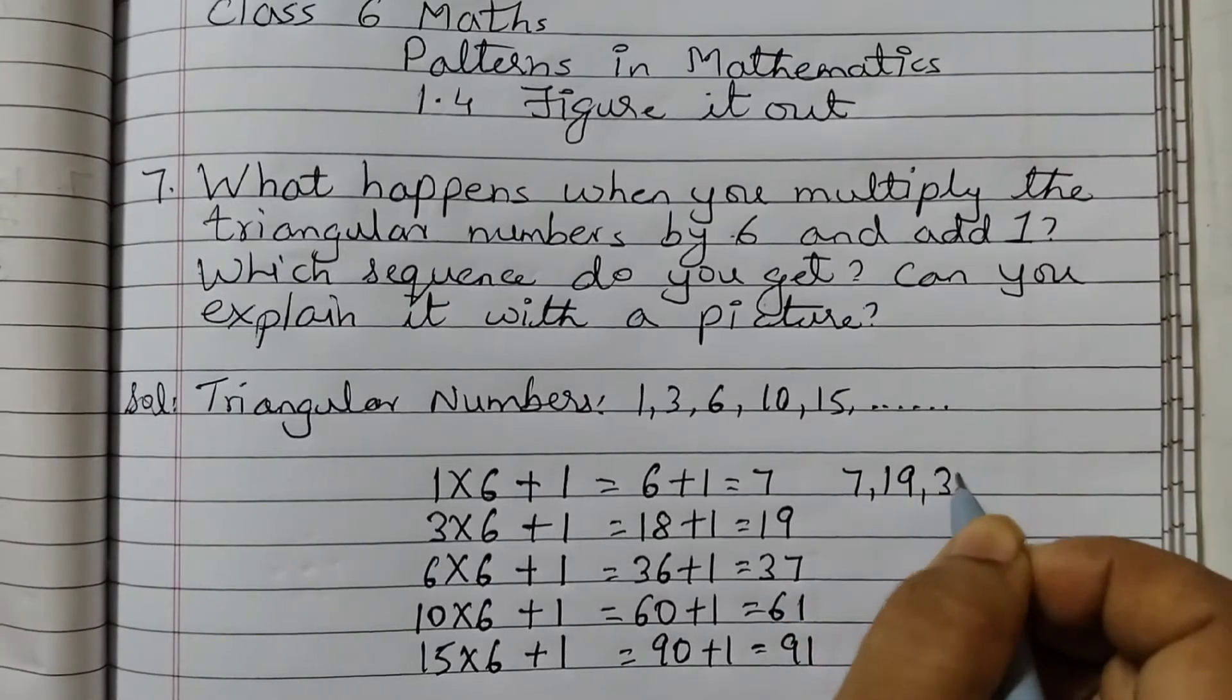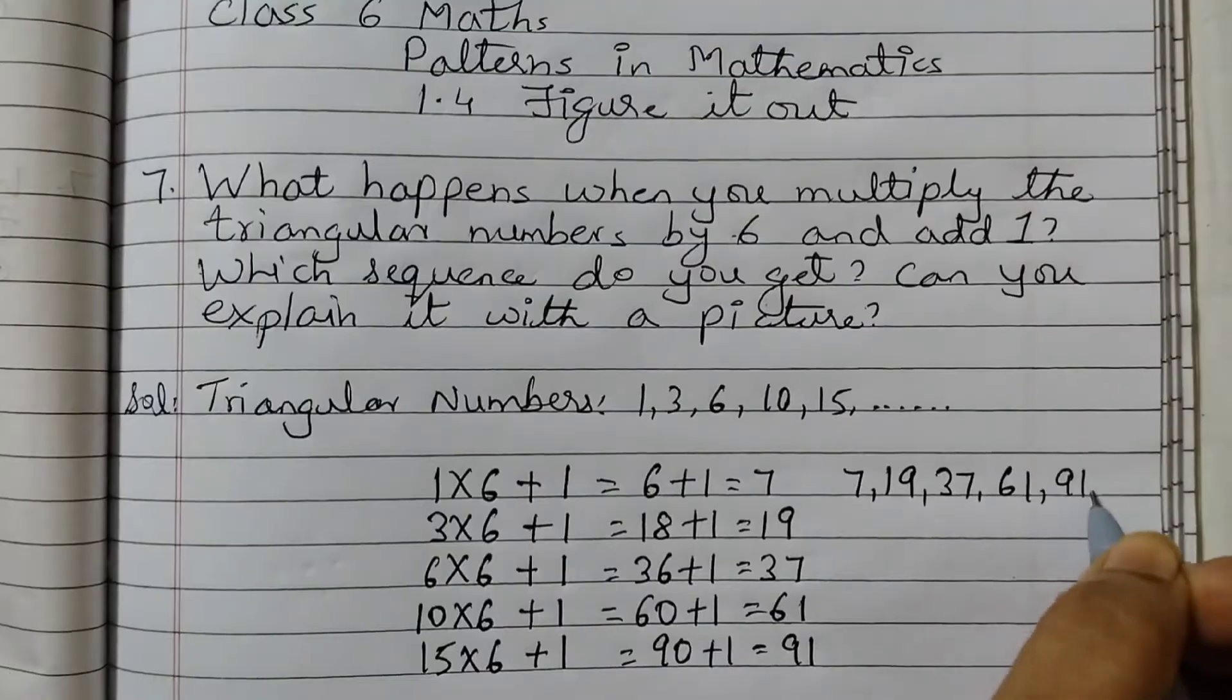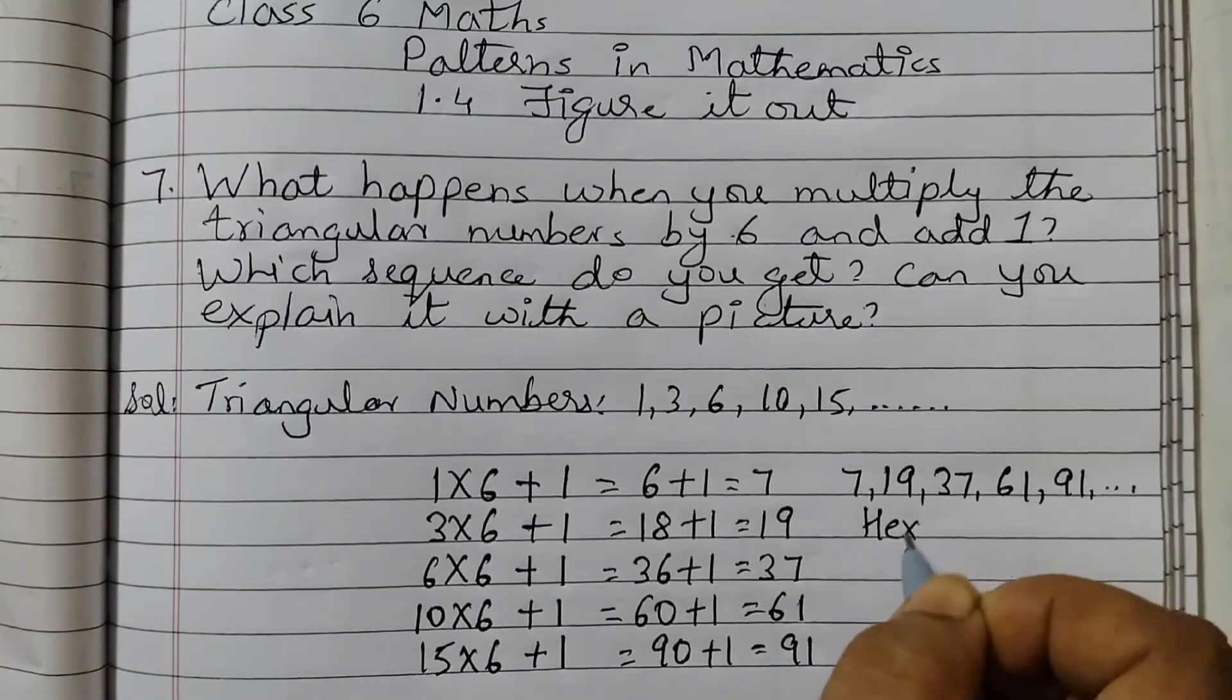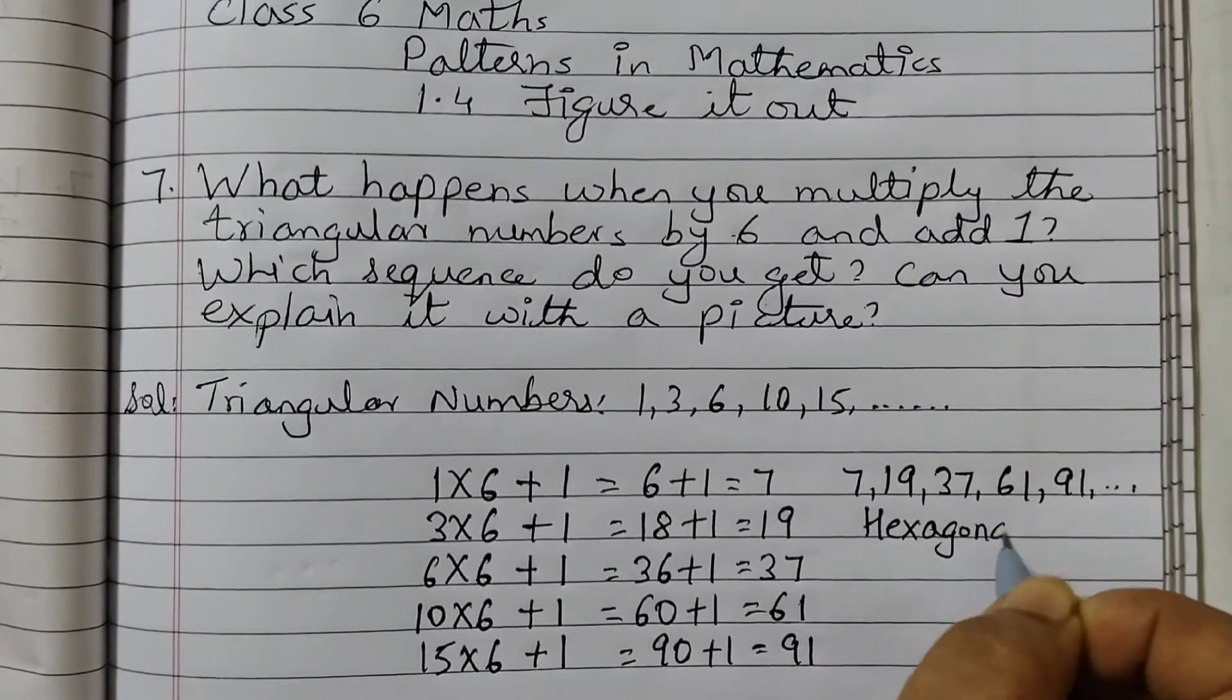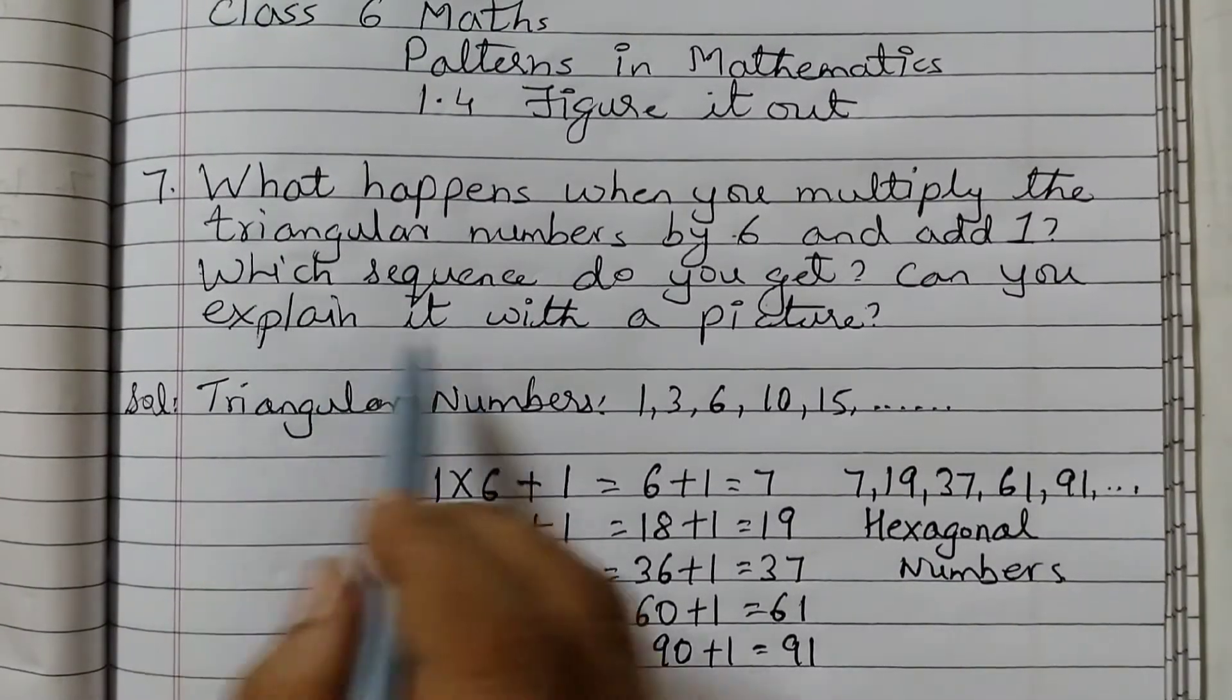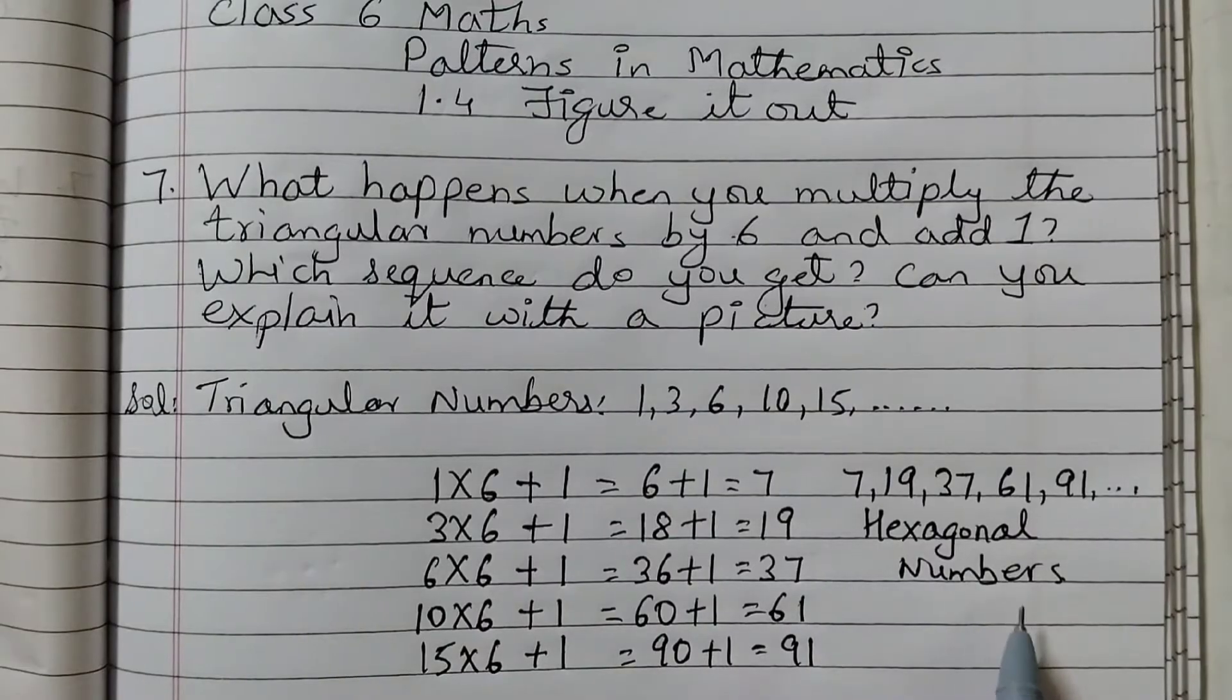So these are the numbers that we are getting: 7, 19, 37, 61, 91 and so on. And what are these numbers? These numbers are hexagonal numbers. Hexagonal numbers.